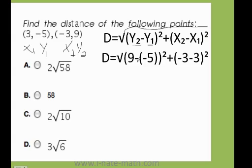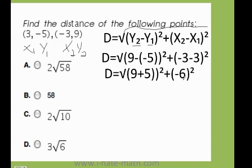Let's do now this piece. Negative times negative is positive. So now I have 9 plus 5 squared plus negative 3 minus 3 is negative 6. And we need to go ahead and square both of that.